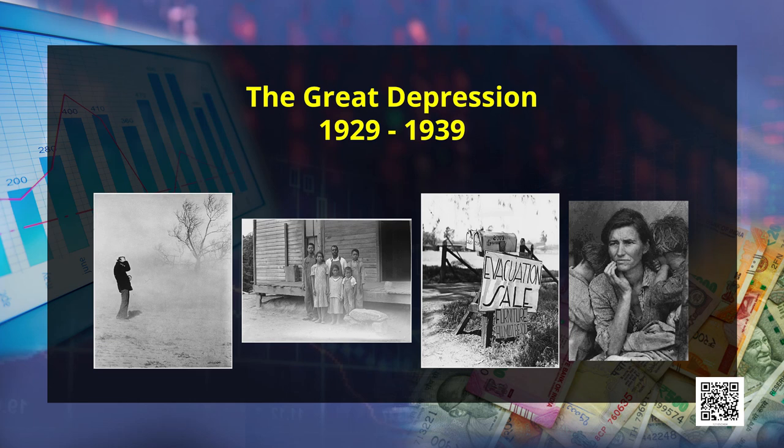Hello students, this is Prateek Vaseen. Today we'll be discussing macroeconomics Chapter 4: Determination of Income and Employment for Class 12th. This chapter got its relevance from the year 1930 when the world faced its most prominent economic recession, well known as the Great Depression — the most disastrous recession in history. It was this period that taught economists to study macroeconomics as a subject.